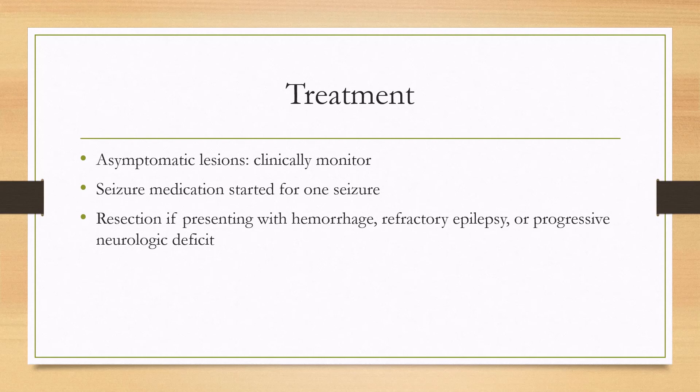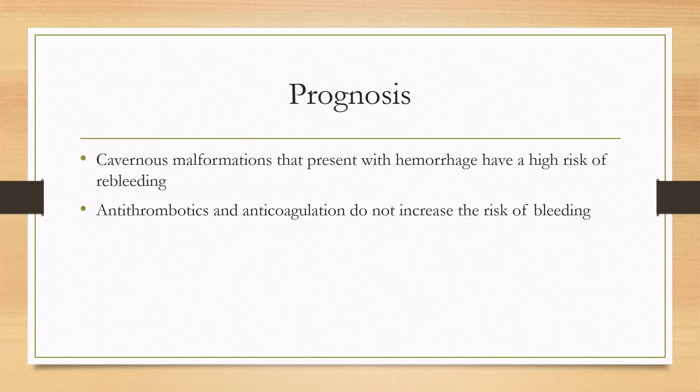If you have hemorrhage, and especially recurrent hemorrhage, that's an indication for resection, as well as progressive neurologic deficits. For prognosis, cavernous malformations that present with hemorrhage have a high risk of re-bleeding. However, antithrombotics and anticoagulation do not increase the risk of bleeding.